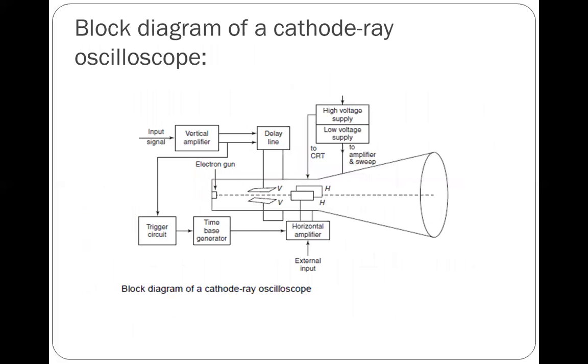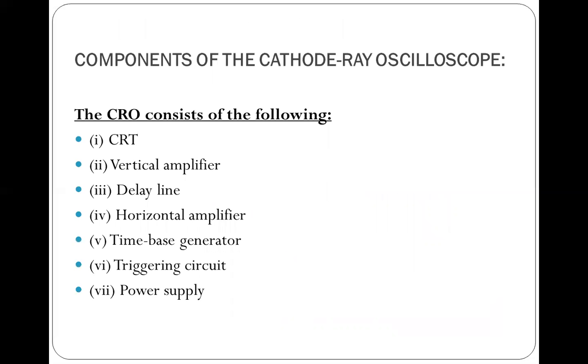This is a basic block diagram of a cathode ray oscilloscope. So what does this consist of? The CRO consists of the following: CRT, that is cathode ray tube, vertical amplifier, delay line, horizontal amplifier, time-based generator, trigger circuit, and power supply.